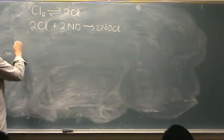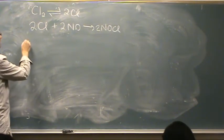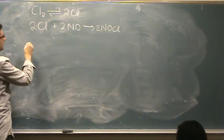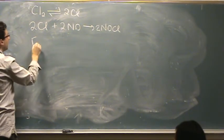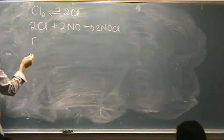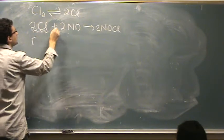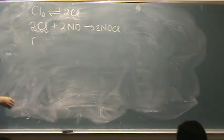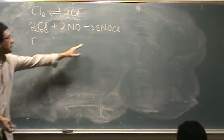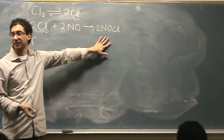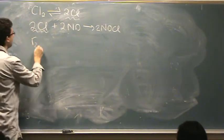What we're going to do to find the rate law is find the rate for the second reaction, because Cl is an intermediate, but NO is not an intermediate, Cl2 is not an intermediate, and NOCl is not an intermediate. So we're going to find the rate for the second reaction because that's the one that produces the products that are not intermediates.